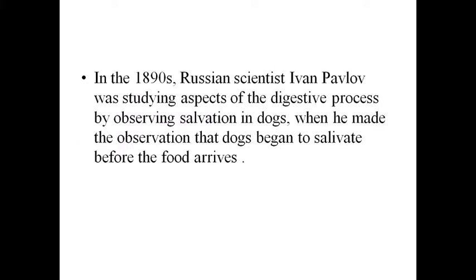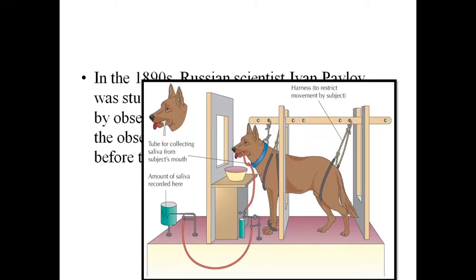In the 1890s, the Russian scientist Ivan Pavlov was studying the aspect of the digestive process by observing the salivation in dogs. He made the observation that the dog began to salivate before the food arrived. From this, he developed a theory of classical conditioning.